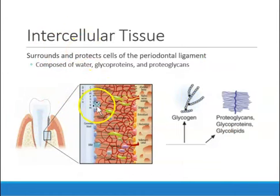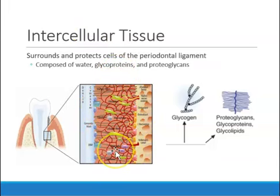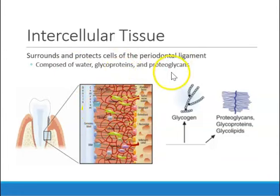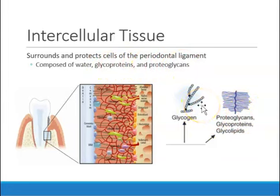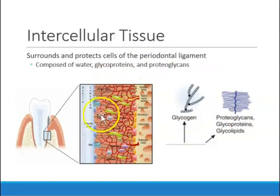Intercellular tissue refers to the substance found in between cells in the periodontal ligament space. Between the cells there is water, as well as different types of proteins — glycoproteins and proteoglycans. For our purposes, just know that they are proteins structured differently, but water and these proteins are present between cells to protect and surround them.